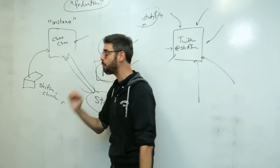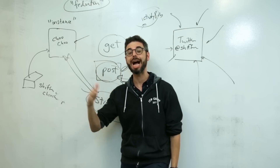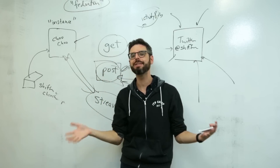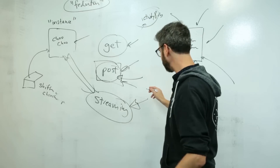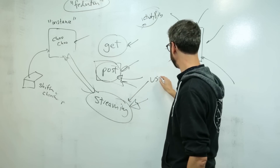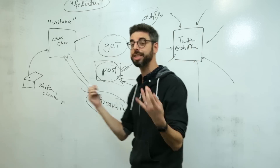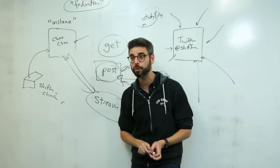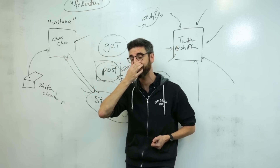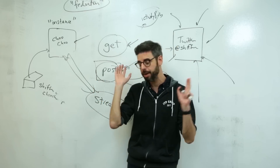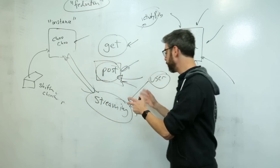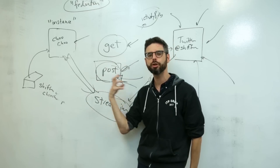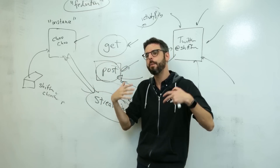The streaming API is a way for me to listen for events in real time. The particular kind of events I'm going to listen for are what's known as user events — so a user event is anytime I might get a notification, or somebody I follow might post something. There are lots of things that come in as user events.